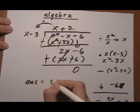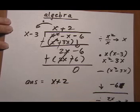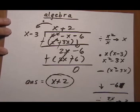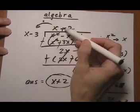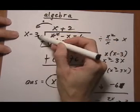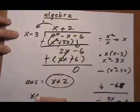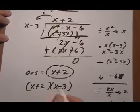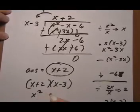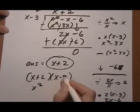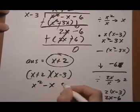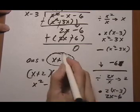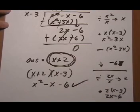So our answer is x plus 2. And just like with the arithmetic, we can check the answer by checking to make sure x plus 2 times x minus 3 equals the inside. And if we do a quick foiling, we get x squared minus 3x plus 2x is minus x, then minus 6, and it works. So our answer with no remainder is x plus 2.